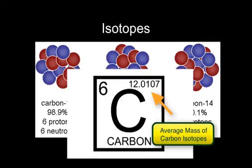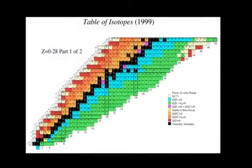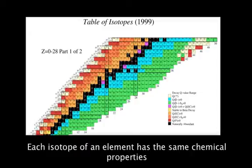You'll notice that none of the elements on the periodic chart have nice whole numbers for their masses, because isotopes exist for all of the known elements. Even though they have different masses, each atom of each element has identical chemical properties.